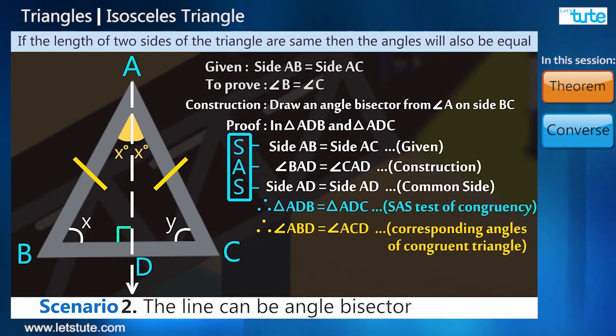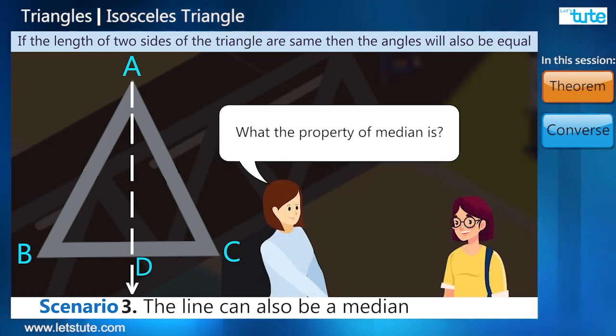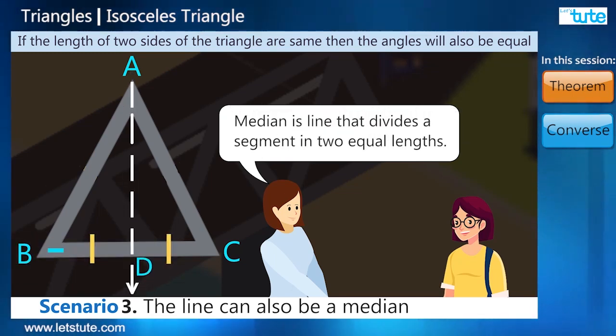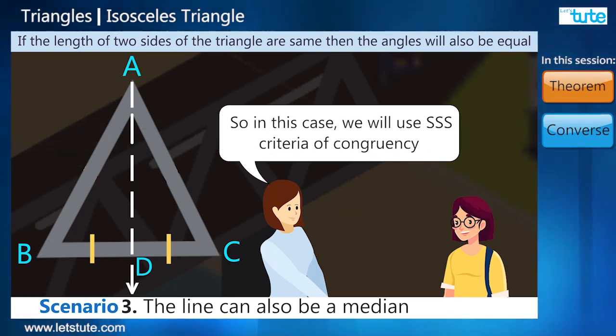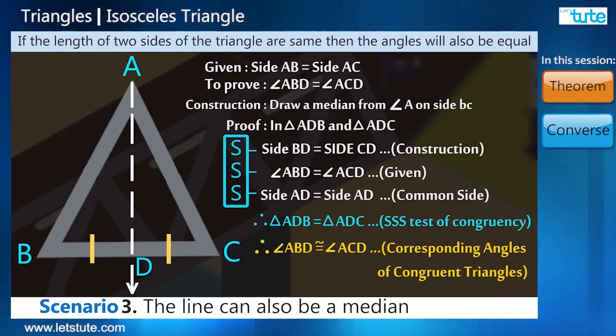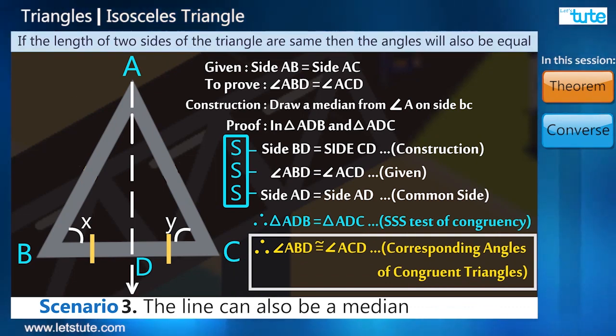Now the third scenario where this line can also be a median. Now here she asked me what the property of median is. Now median is a line that divides a segment in two equal lengths. So in this case we will use SSS criteria of congruency and the angles will be equal by the corresponding angle property.